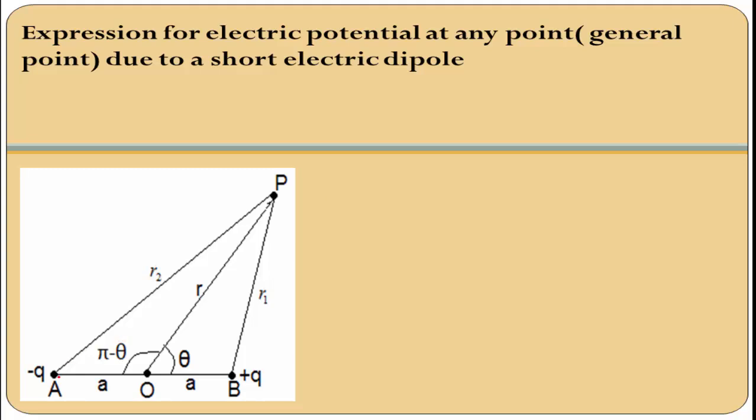The dipole means these are two charges separated by a small distance. At point A this is the negative charge, at point B this is the positive charge. These two point charges separated by small distance 2A form an electric dipole. Due to this dipole, at point P some electric potential is produced.